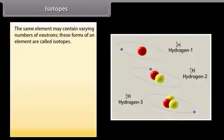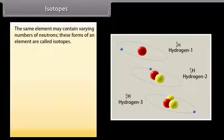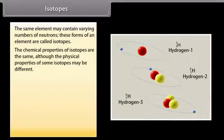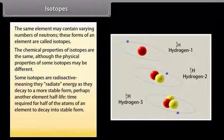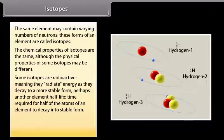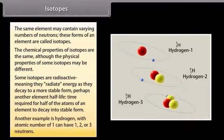The same element may contain varying numbers of neutrons. These forms of an element are called isotopes. The chemical properties of isotopes are the same, although the physical properties of some isotopes may be different. Some isotopes are radioactive, meaning they radiate energy as they decay to a more stable form. Half-life is the time required for half of the atoms of an element to decay into a stable form. For example, hydrogen with atomic number 1 can have 1, 2, or 3 neutrons.